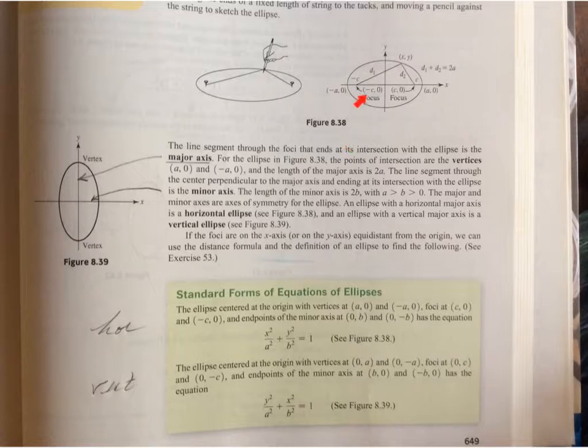The line segment through the foci that ends at its intersection with the ellipse is called the major axis, and this is called the minor axis. Sometimes you get one like this where the major axis is vertical and the minor axis is horizontal, but they will always be perpendicular. Some of them will be squished more than others. This is a horizontal ellipse and this is a vertical ellipse because the major axis is vertical or horizontal.